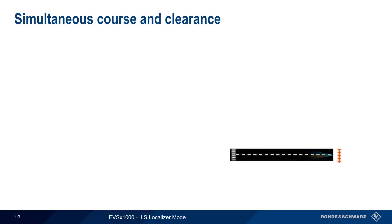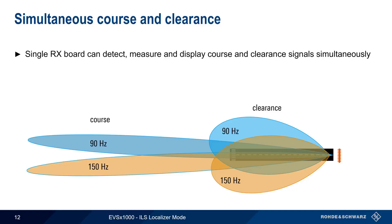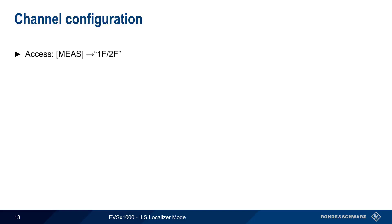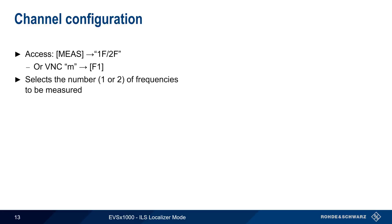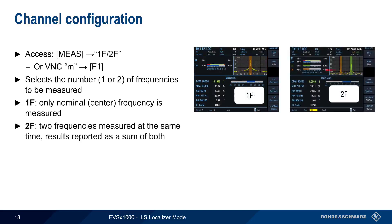Many ILS systems consist of both a course and a clearance signal. A single receiver board in the EVS1000 can detect, measure, and display course and clearance signals simultaneously. The way the EVS displays measurement results depends on the channel configuration — whether it is configured to measure one or two frequencies. To configure channels, press Measure and then 1F or 2F, or use the VNC shortcuts. 1F measures only at a single frequency, whereas 2F measures at two frequencies simultaneously and results are reported as the sum of both measurements.